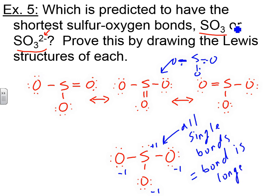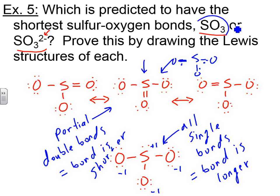And in this case, because you have partial double bonds, bond is shorter. So partial double bonds equals bond is shorter. So this is actually experimentally verified. We would see experimentally that the bond distance in sulfur trioxide, which is this compound, is shorter than in sulfite, which is this compound, or polyatomic ion. So hopefully that makes sense.